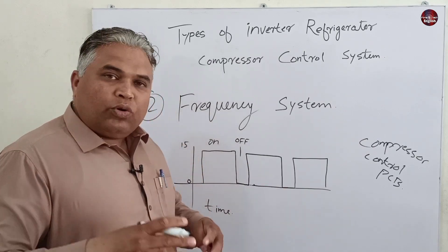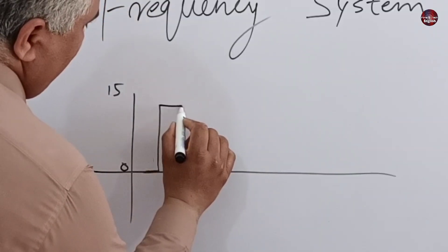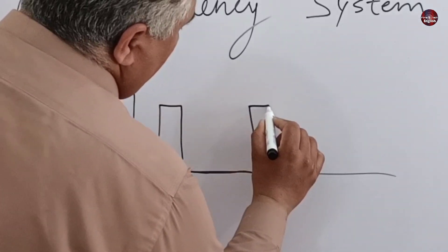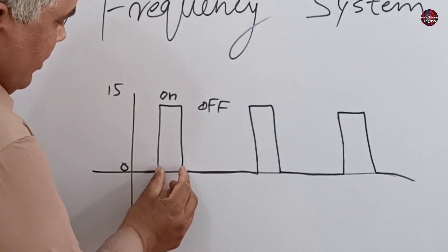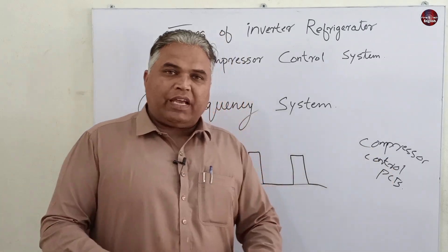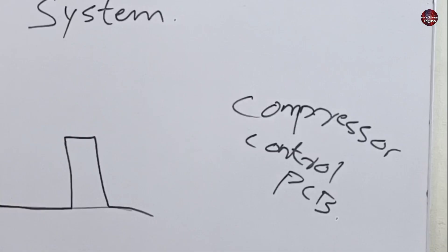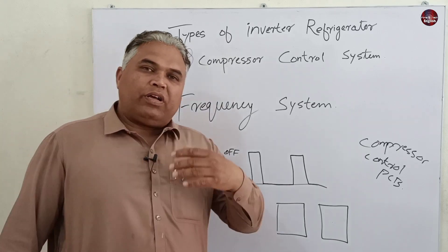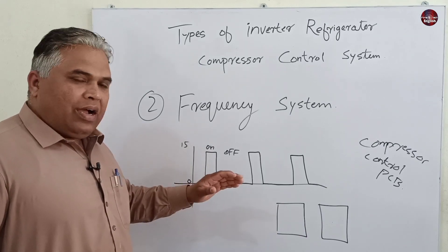When the cooling in the refrigerator is completed, the signals will change — the voltages turn on but turn off quicker, the off time of the signals increases and the turn-on time is reduced. The compressor control PCB will understand that the refrigerator doesn't need much cooling. In this system, two control boards are used: the main PCB and the compressor control PCB. This control board communicates through the on and off time of the signals. Because it is a very simple and easy-to-understand control system, it is available cheaply in the market.